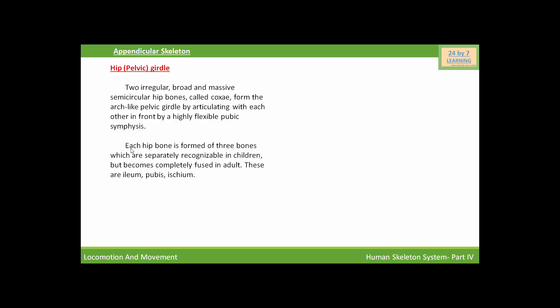Each coxal bone, or hip bone, is formed of three bones which are separately recognizable in children but become completely fused in adults. These three bones are named the ilium, pubis, and ischium. These three bones fuse together to form a hip bone, called the coxal bone, and two coxal bones fuse together to form the pelvic girdle. The pubis and ischium are separated by a large space called the obturator foramen.